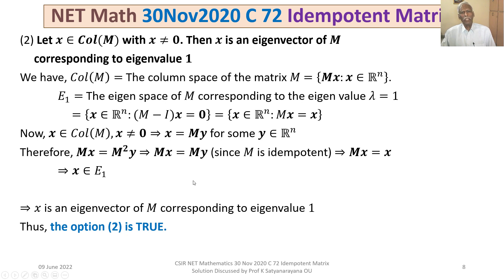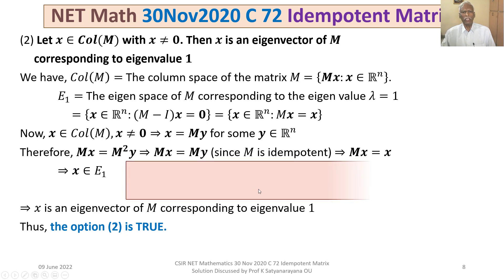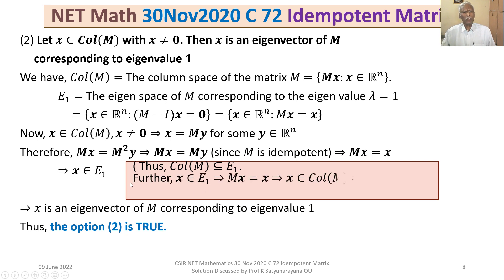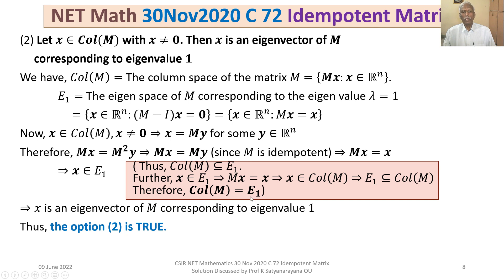An important note: we have shown that the column space of M is contained in E₁. Conversely, if x ∈ E₁, then Mx = x, so x = Mx, meaning x belongs to the column space of M. Therefore E₁ is also contained in the column space of M. Combining both inclusions, the column space of M equals E₁ exactly.